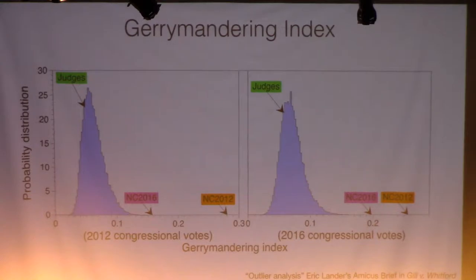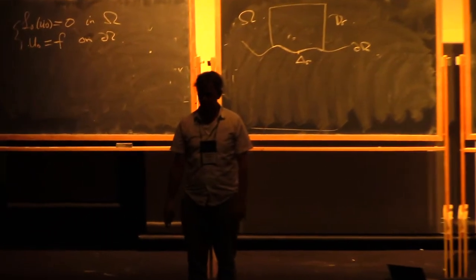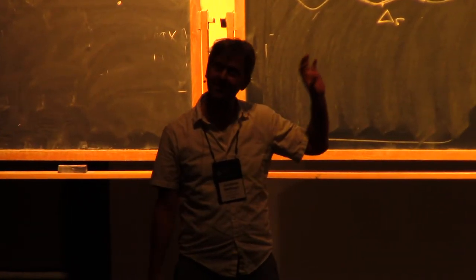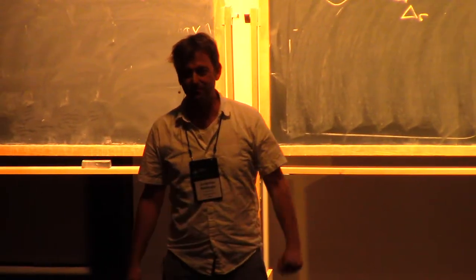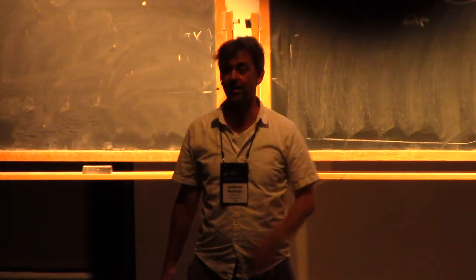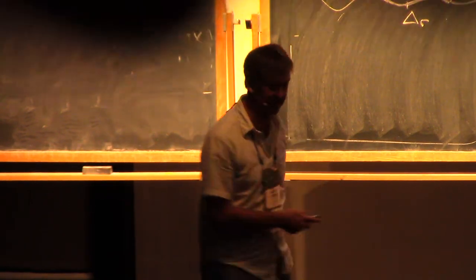Eric Lander, who was the head of the Broad Institute and a mathematician — and one is never not a mathematician, he's still a mathematician — wrote an amicus brief that was based heavily on our work and Joey Chen's work. Justice Kagan brought up that brief in court and discussed this idea of outlier analysis. And now that's become a term — outlier analysis in the legal world. People talk about it now.